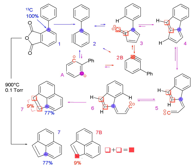Isotopic labeling is a technique used to track the passage of an isotope — an atom with a detectable variation in neutron count — through a reaction, metabolic pathway, or cell.